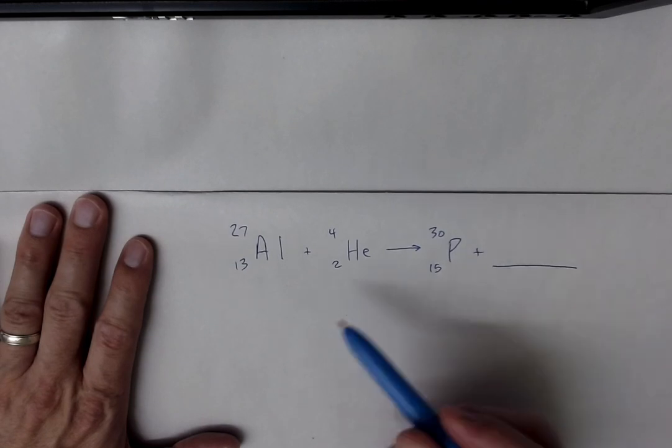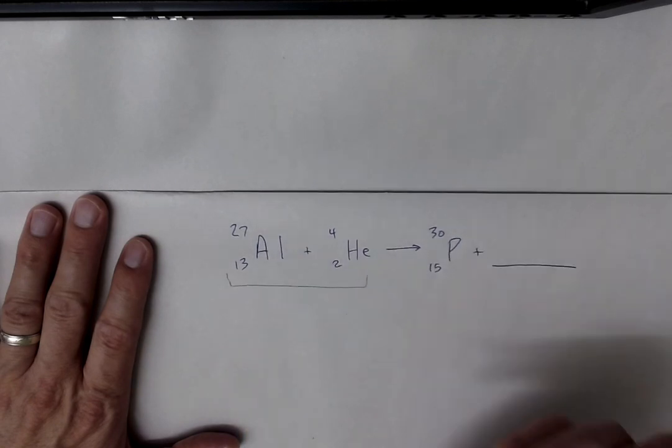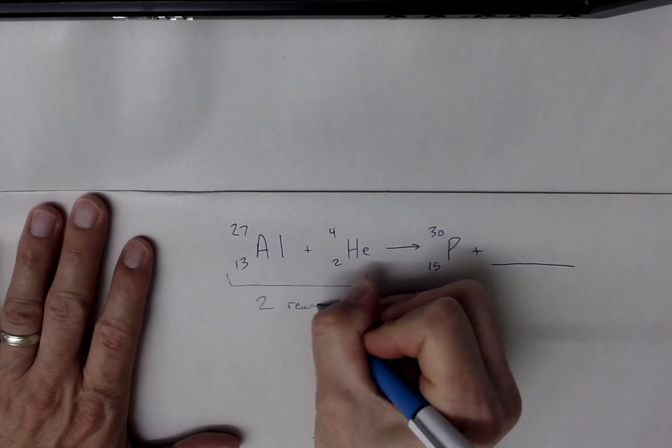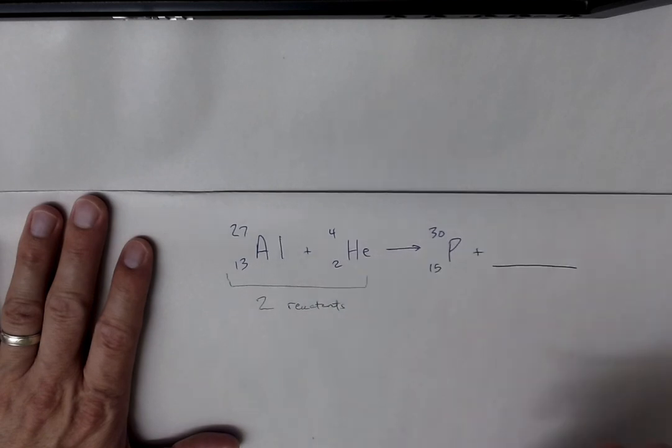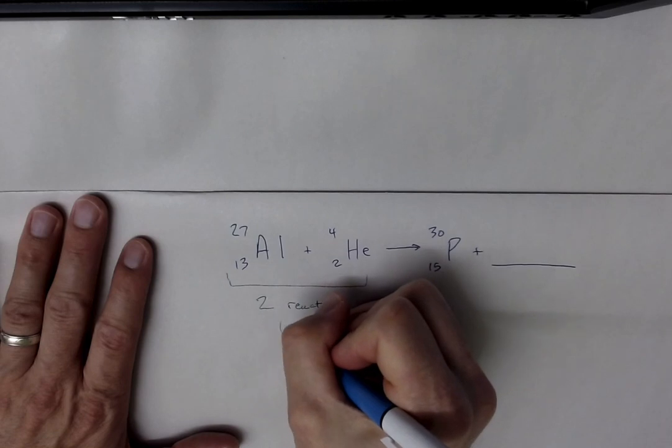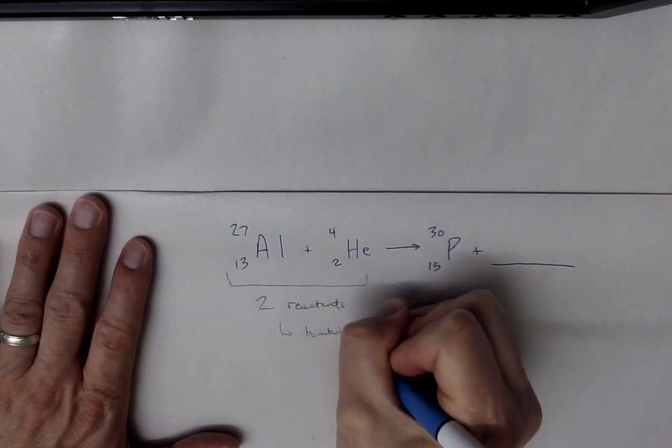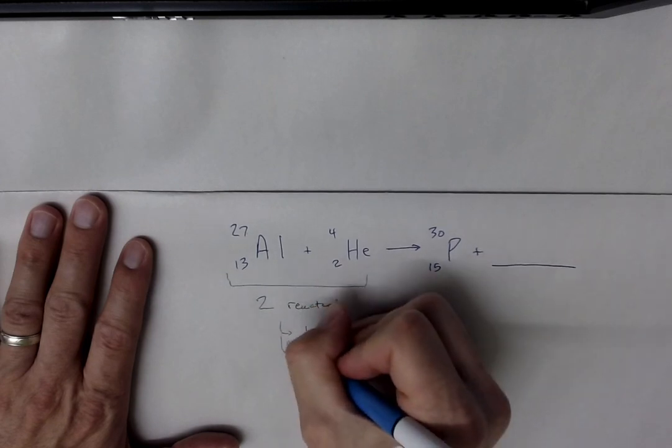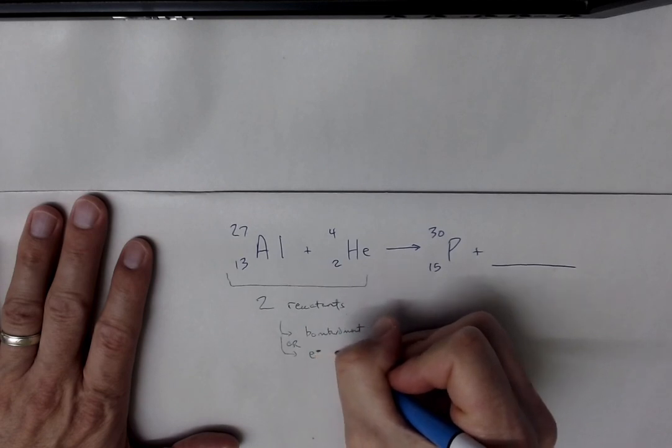So one thing we want to do is we can look and say, what kind of radioactive process is this? We see two reactants. So if there are two reactants, it's either going to be bombardment or electron capture.